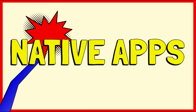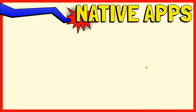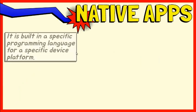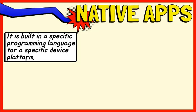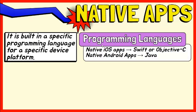The first mobile apps category that we will tackle is native application, or native app. A native app is built in a specific programming language for a specific device platform, such as iOS or Android. Native apps are coded using a variety of programming languages. For example, native iOS apps are written in Swift or Objective-C, and native Android apps are written in Java.